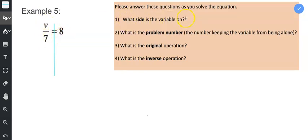Number one, what side is the variable on? The variable is on the left side. You see the V over here. What is the problem number? Alright so on this left side what's keeping V from being alone? Well there's a 7 on the left side which is keeping it from being alone.